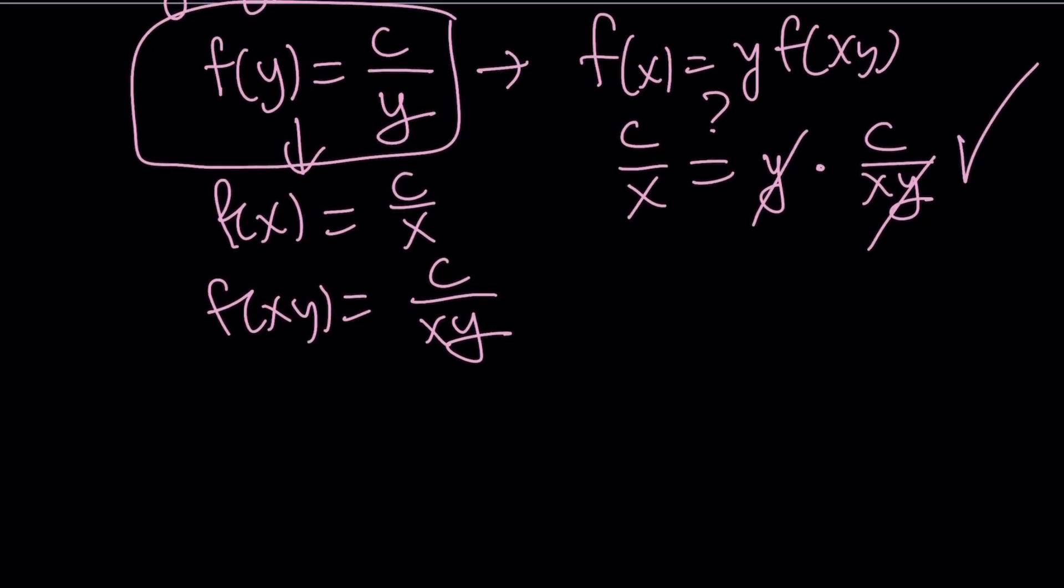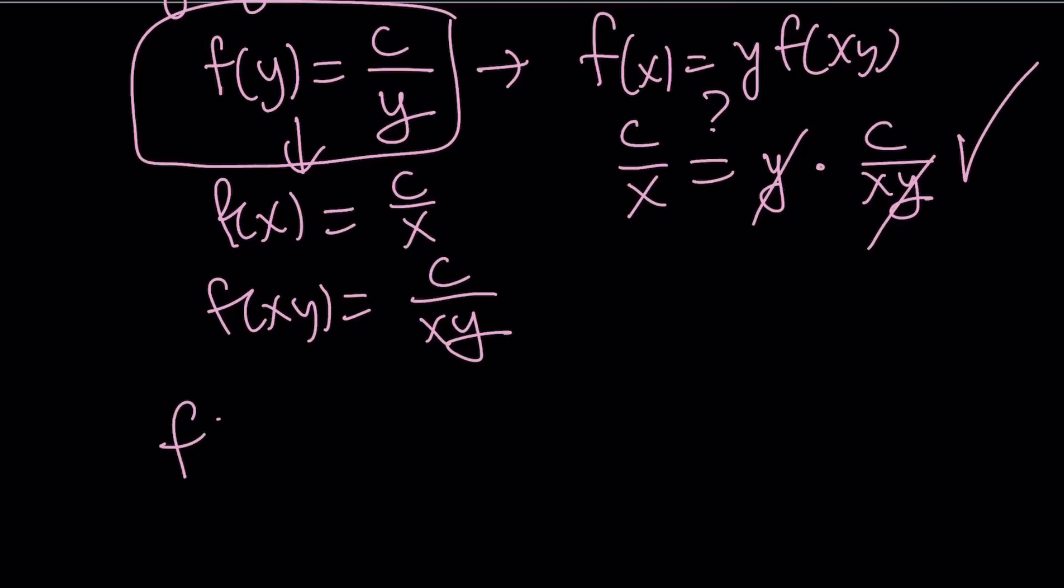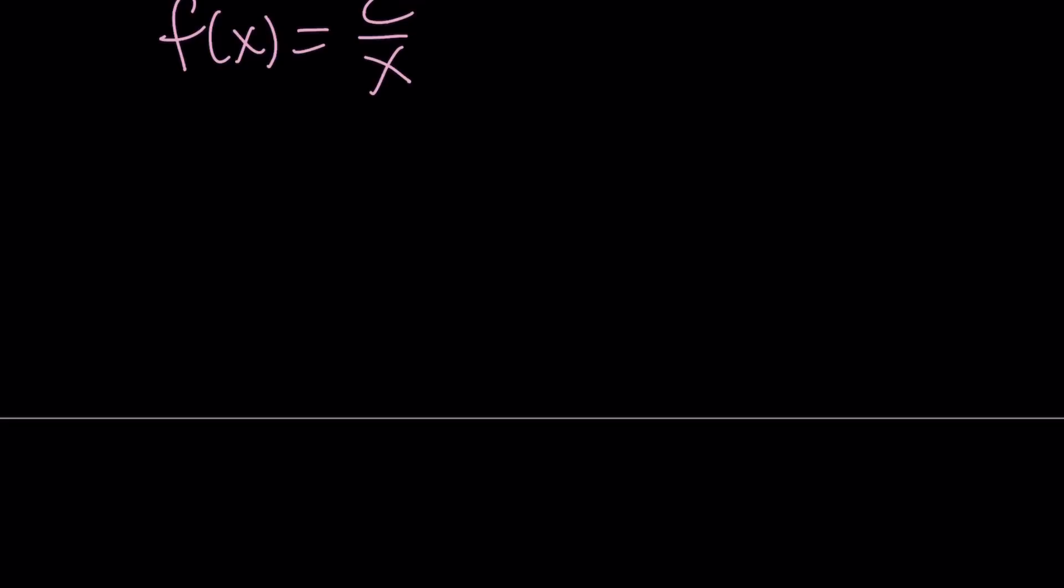So now we have f(y) equals c over y, which is nice, but do you want to turn it into an x? Well, some people like x, so let's go ahead and do that. Wrote f(x) as c over x. This is cool, because now I can find what I need. Remember, the problem gave you f(40) as 30, and it was asking for f(50).